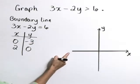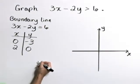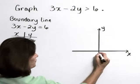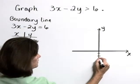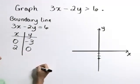Let's plot those points over here on our rectangular coordinate system. We have the point x equals 0, y equals negative 3, and we have the point x equal to 2, y equals 0.